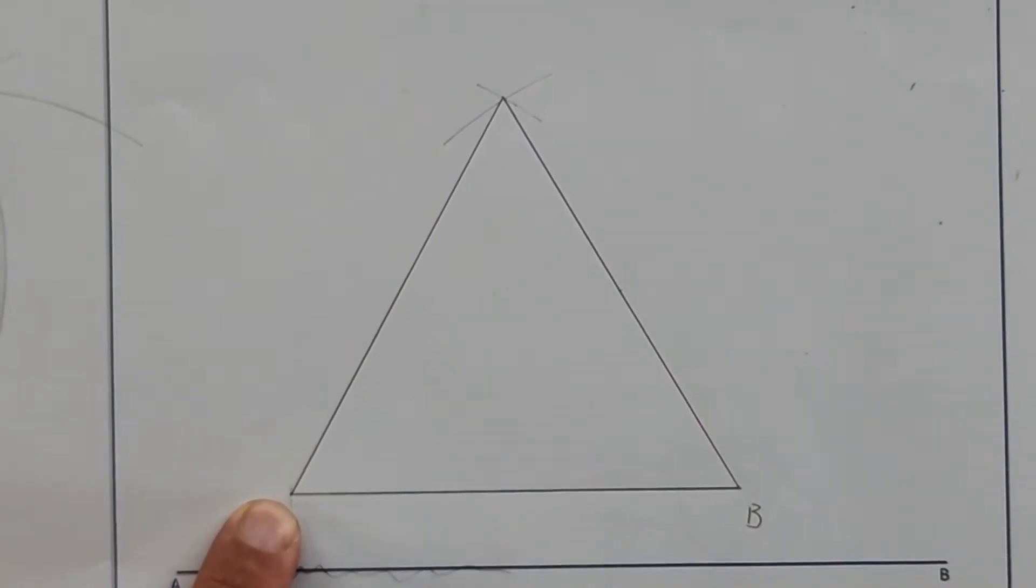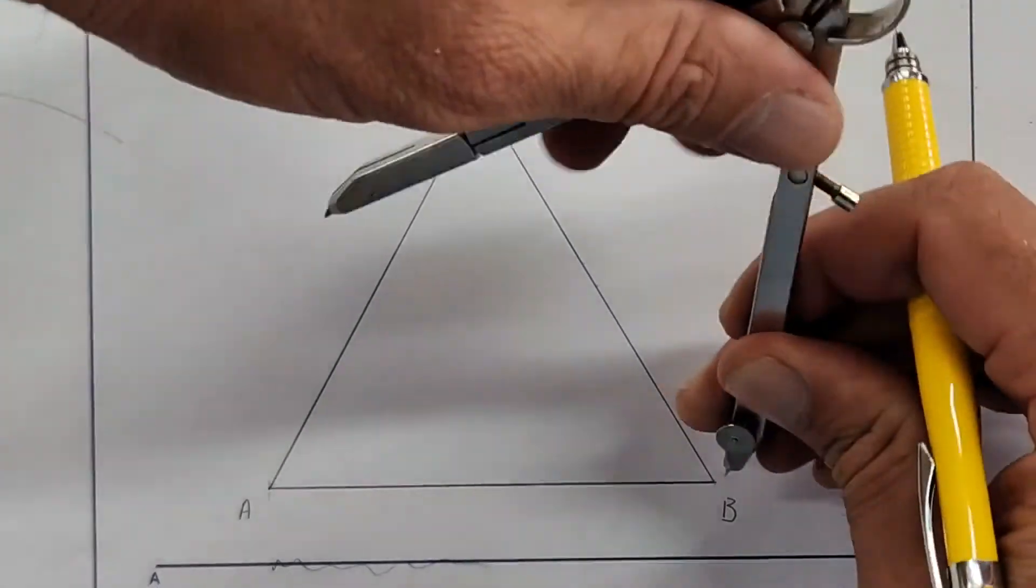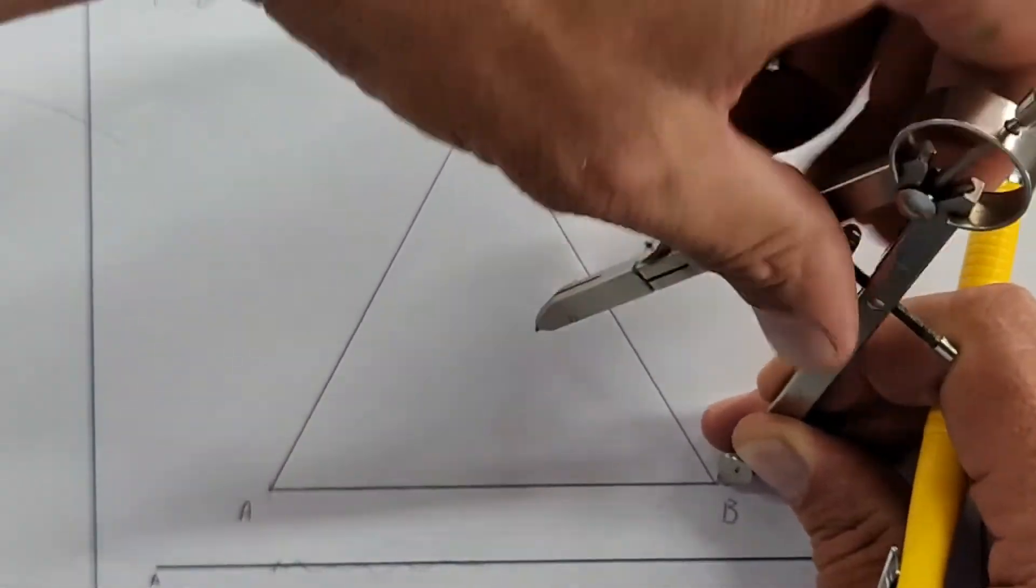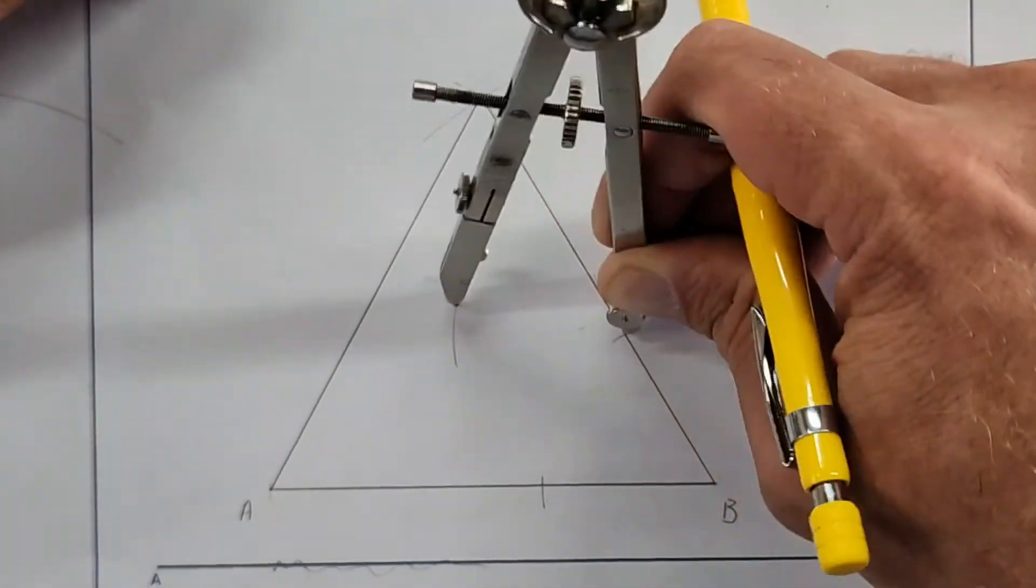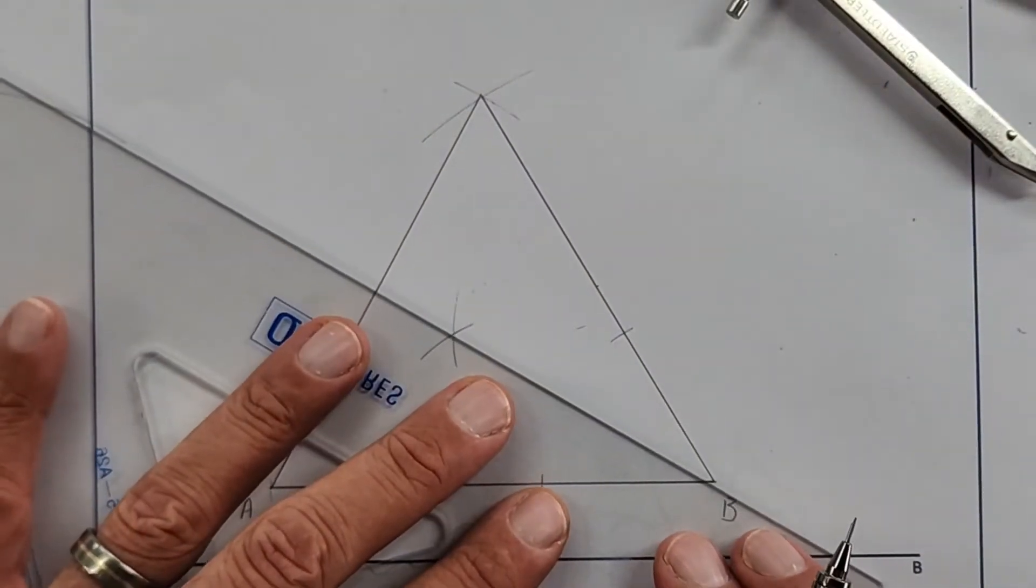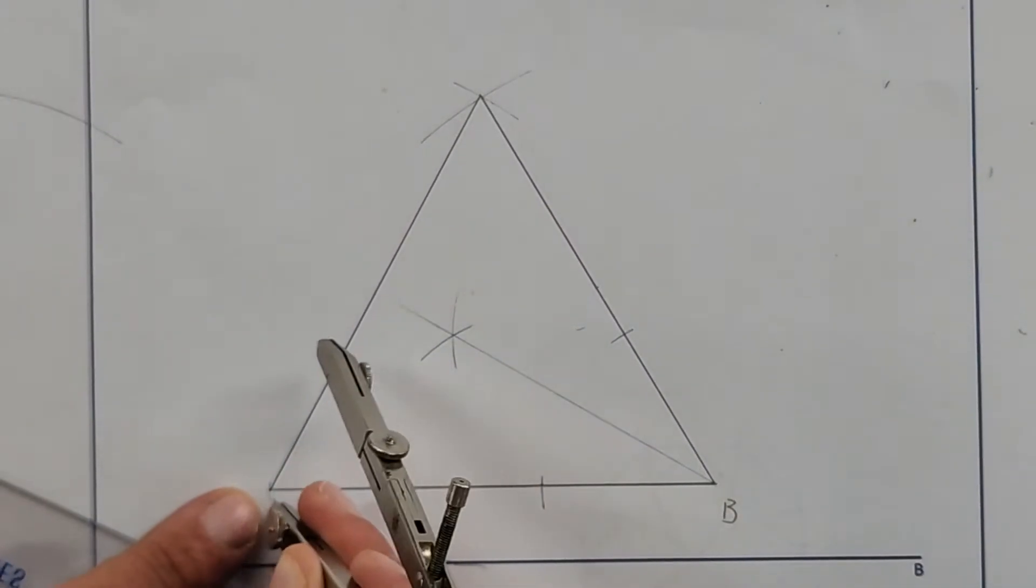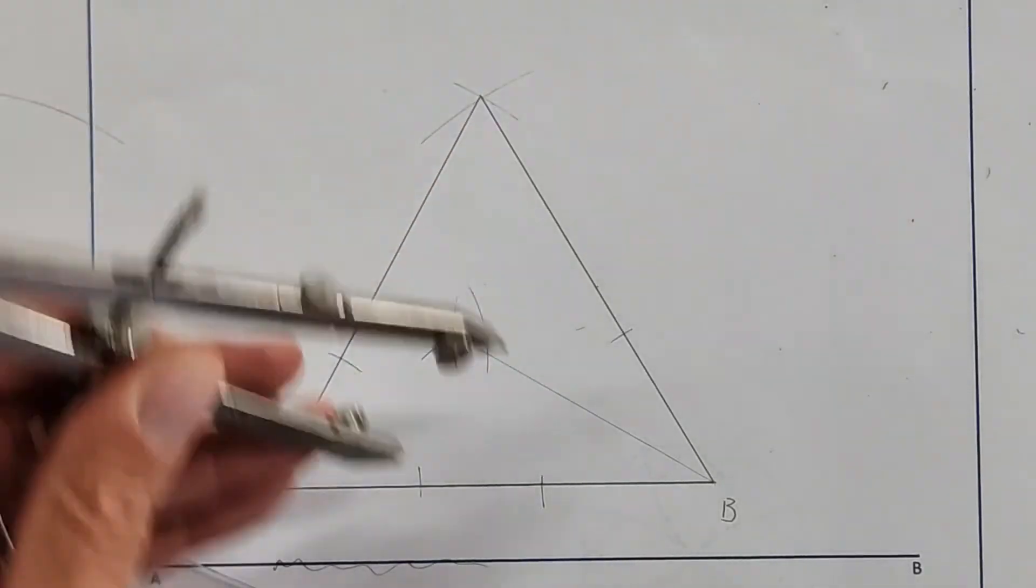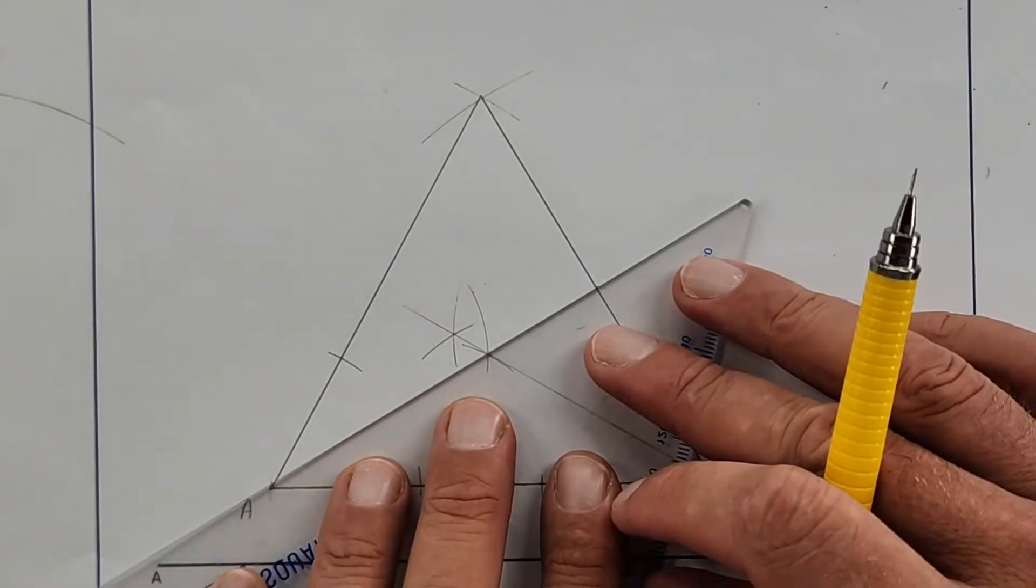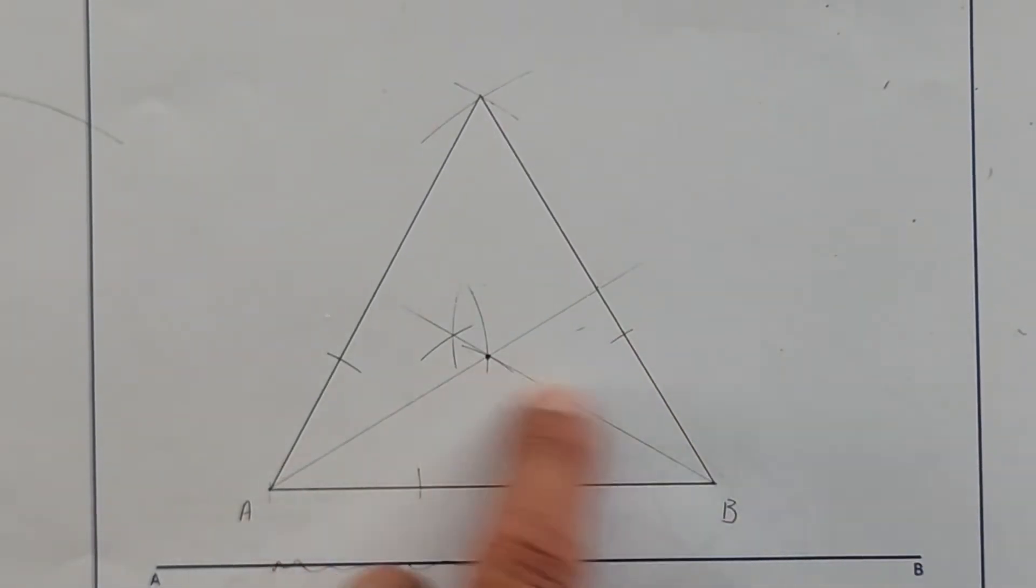So we're going to take our compass, any radius. Make a mark this side, make a mark that side. Next step, make a mark, make a mark that one. Construction line. Now we bisected this first corner. Now I can choose any other. Let's choose this one. My radius can be different if I want. Let's make it different. Same radius. Where the two lines meet is the midpoint. That's the center.